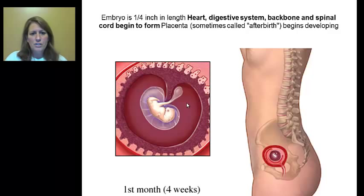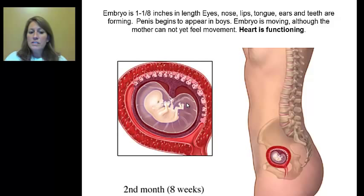In the first month, the heart, digestive system, backbone, and spinal cord are forming, and the placenta has become intact. In the second month, the heart is functioning. You can see the penis in boys, and the eyes, nose, lips, and ears are forming. Even the teeth are forming — they haven't erupted yet, but they are there.